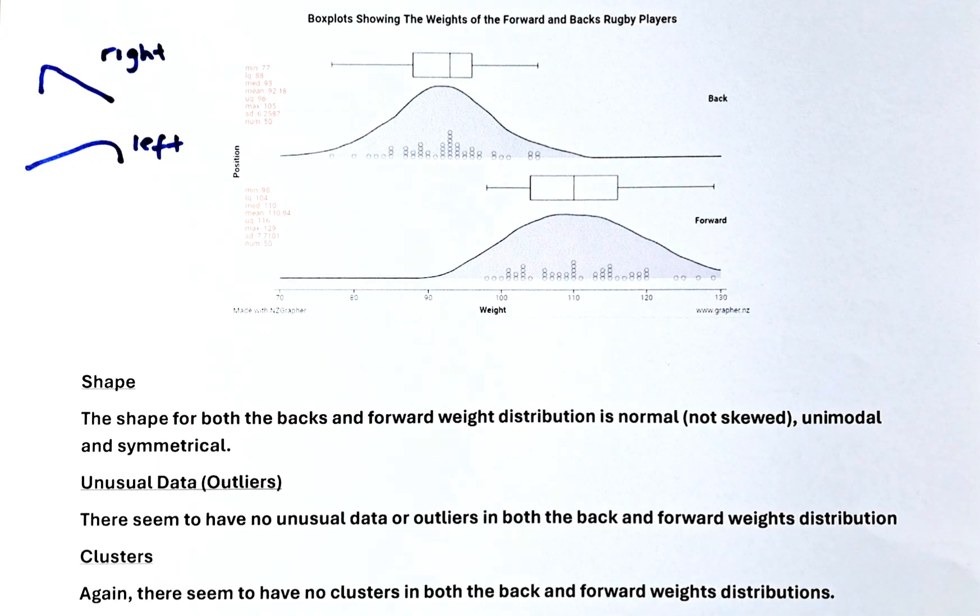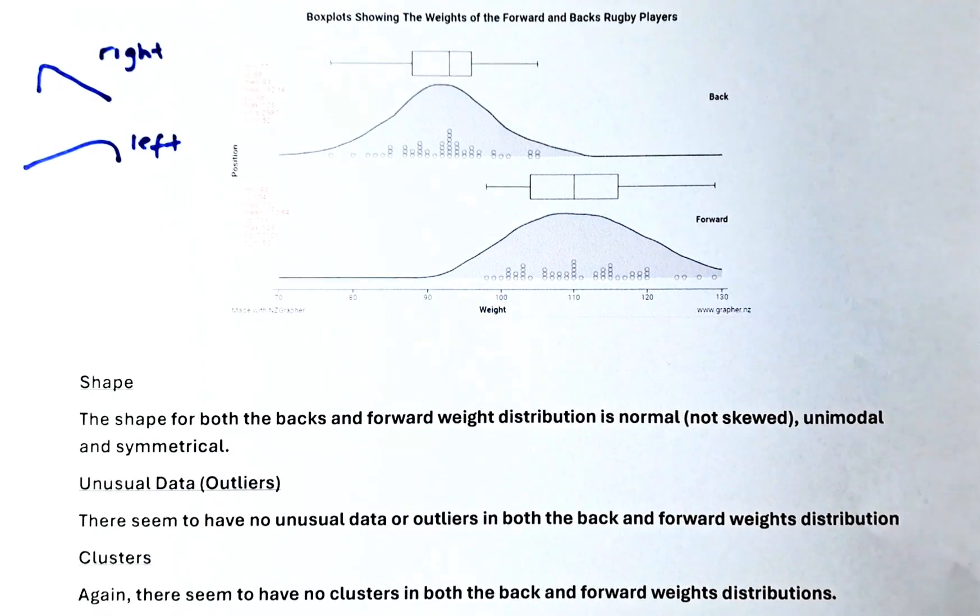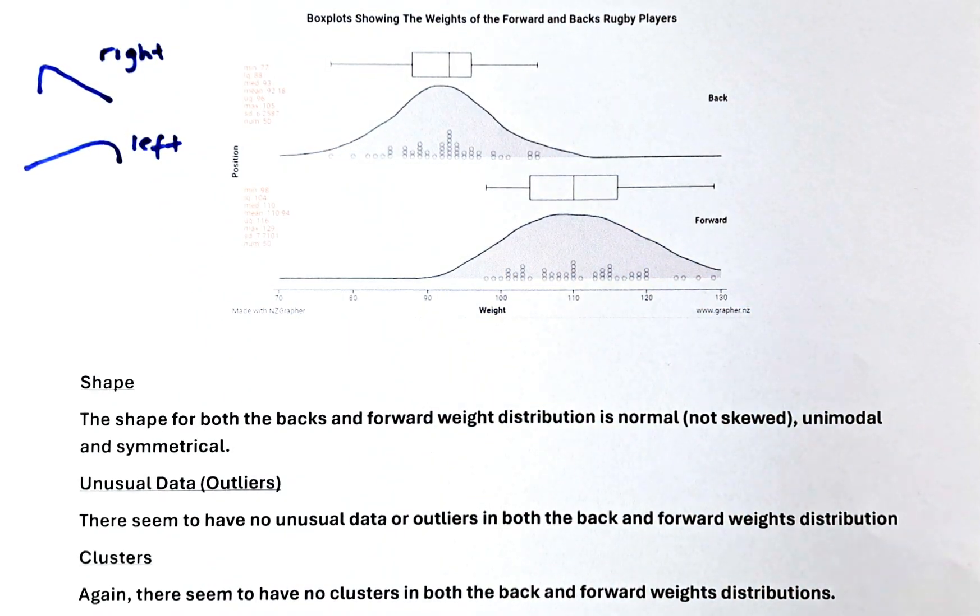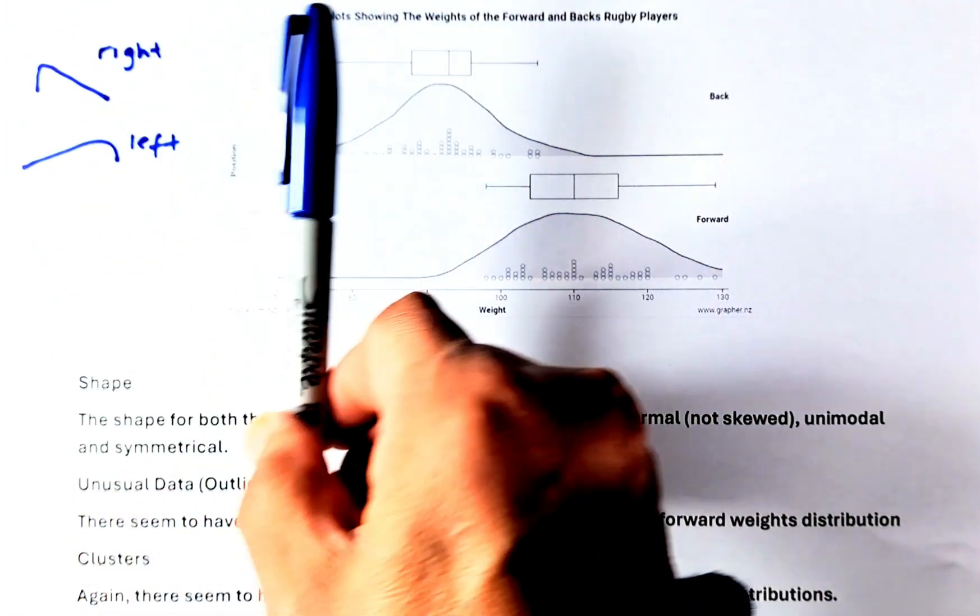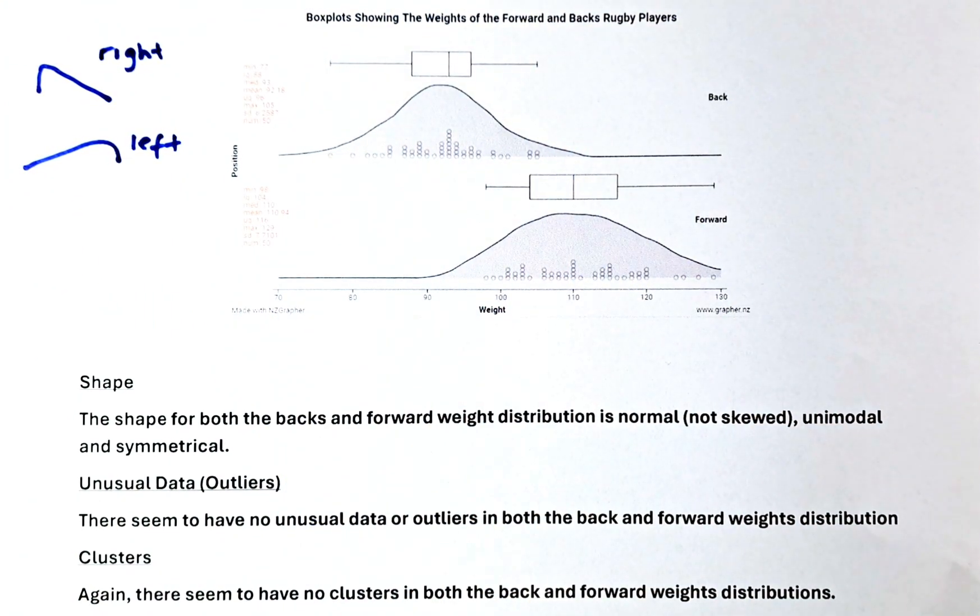So without further ado let's try to talk about the shape. We look at the shape here, it looks like a normal bell-shaped curve. It is also quite symmetrical. The left hand side is equal to the right hand side so we say it is symmetrical.